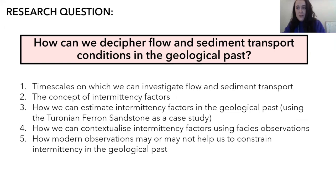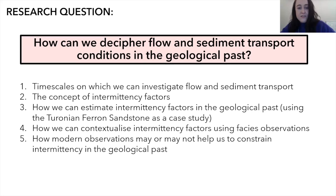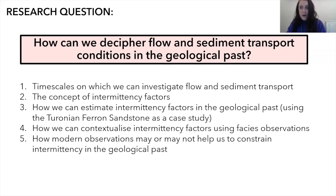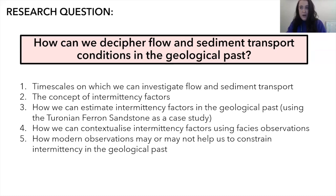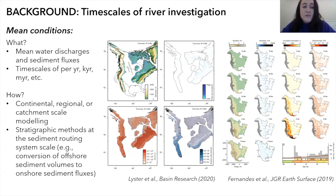My research question is: how can we decipher flow and sediment transport conditions in the geological past? Today I'll give background on the timescales on which we can investigate flow and sediment transport, run through the concept of intermittency factors, use the Ferron Sandstone as a case study, and discuss how modern observations may or may not help constrain intermittency. We can reconstruct mean conditions — mean water discharges, mean sediment fluxes — on timescales of per year, per thousand years, per million years, using continental or catchment-scale modeling.